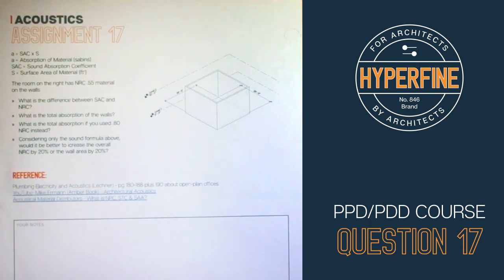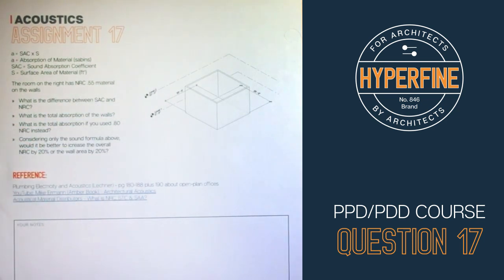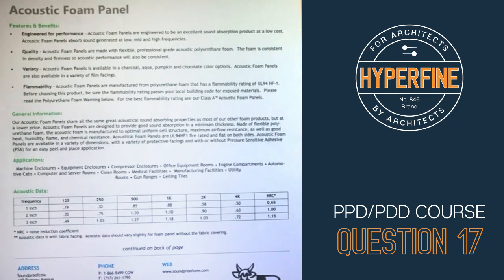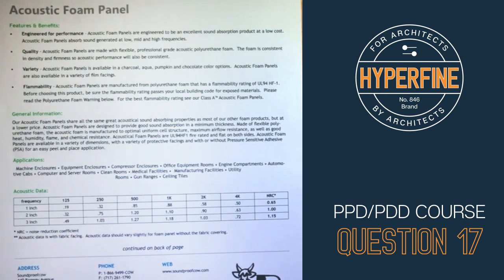The first question asks: what is the difference between SAC and NRC? SAC is Sound Absorbing Coefficient and NRC is Noise Reduction Coefficient. Looking at a cut sheet for a foam panel, you'll see a table of SAC values. A coefficient is a number between 0 and 1 — a higher number means that object will absorb more sound.